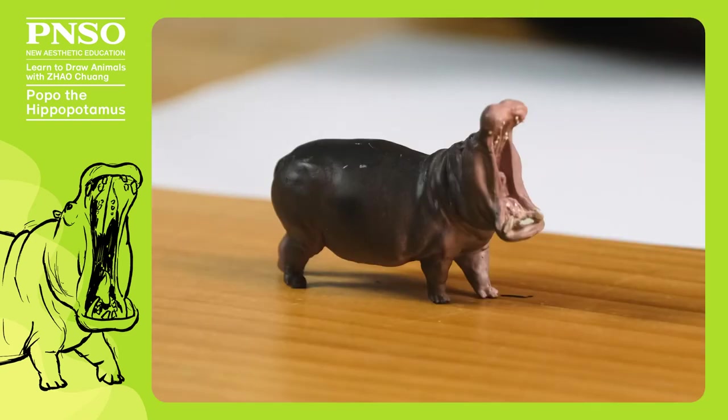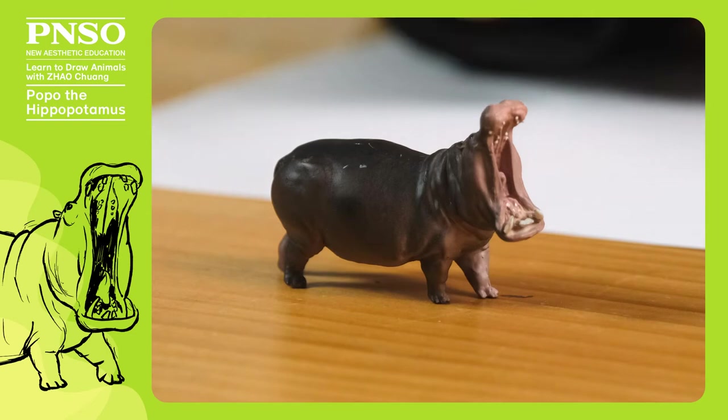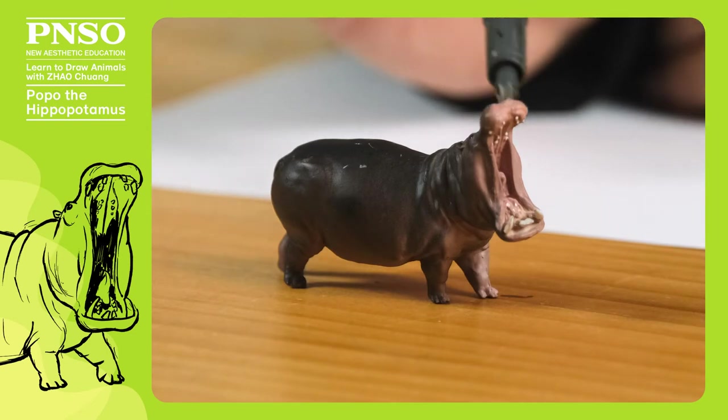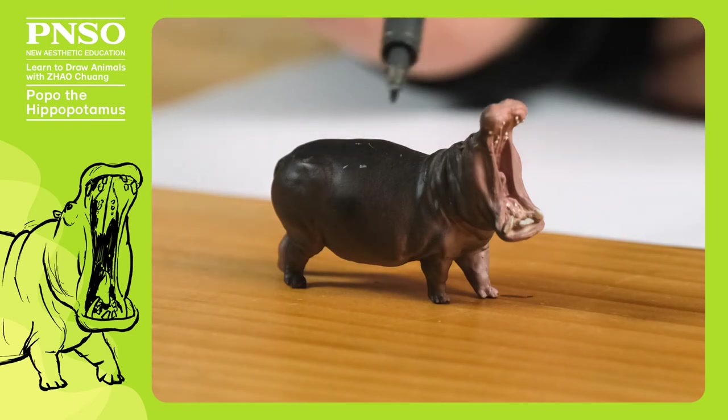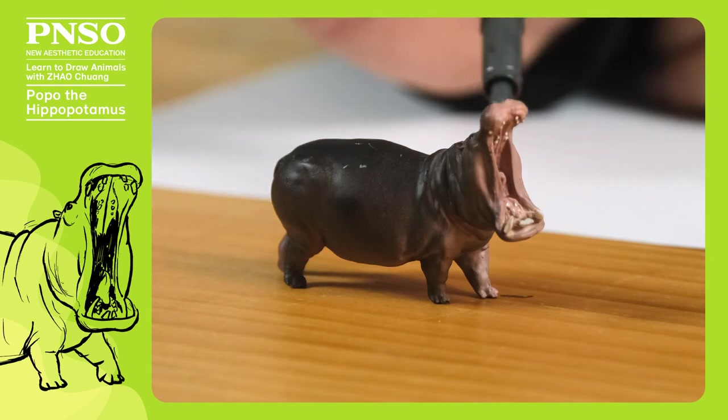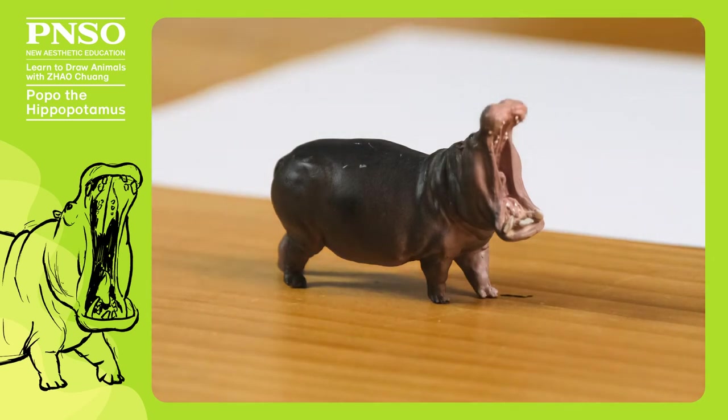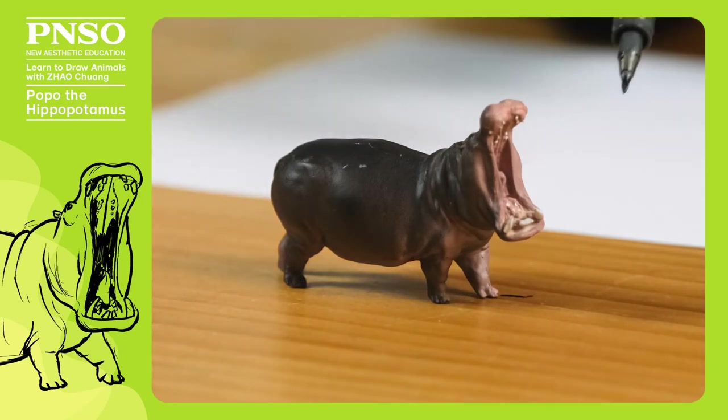When drawing the hippopotamus, we should pay attention to the proportion between its head and its body. The part from its head to the root of its neck probably accounts for one third of its body length. Then for its trunk, we must show its heaviness and plumpness. Its limbs are very short, which looks somewhat funny. So when drawing, we must first get into the overall composition and determine the positions of its body parts.